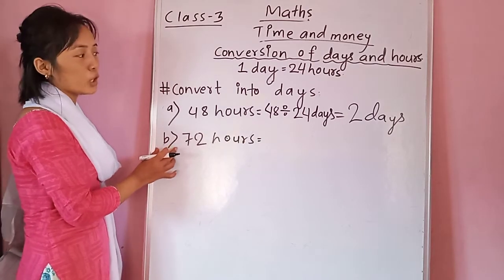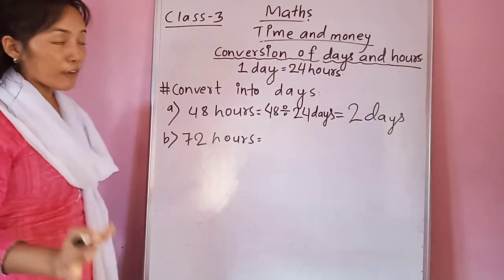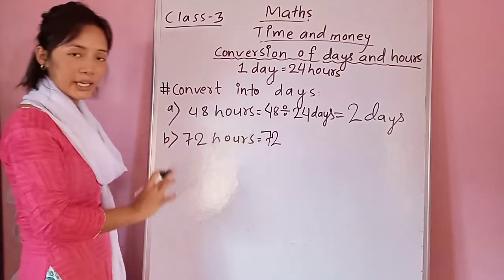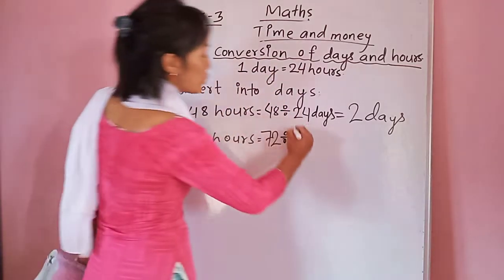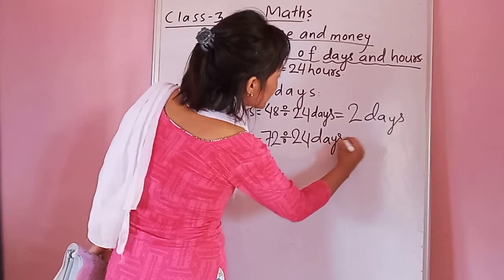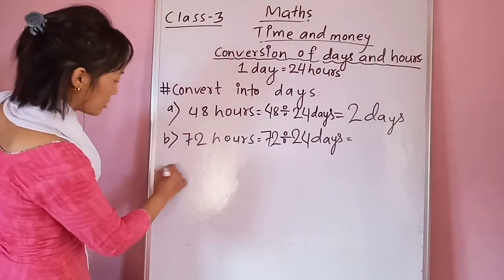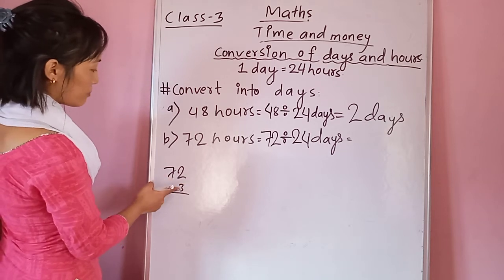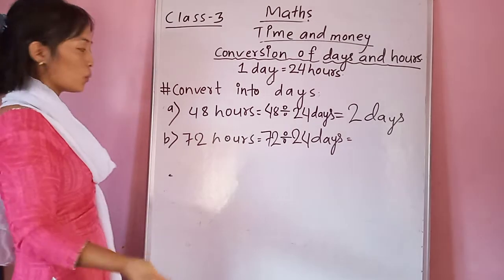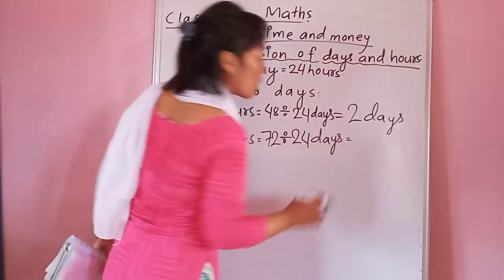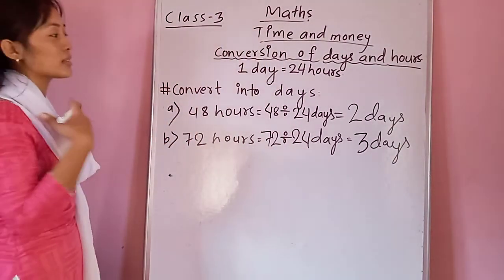Now let's solve question b: 72 hours. Apply the same method — only the given number is different. Write 72 as it is, write a divide sign, and divide by 24. Don't forget to write 'days' instead of 'hours.' When you divide 72 by 24 — you can solve in your rough copy — you get exactly 3 days.